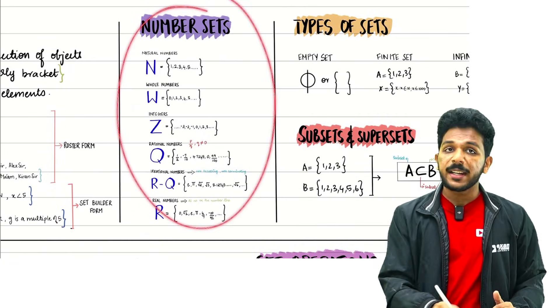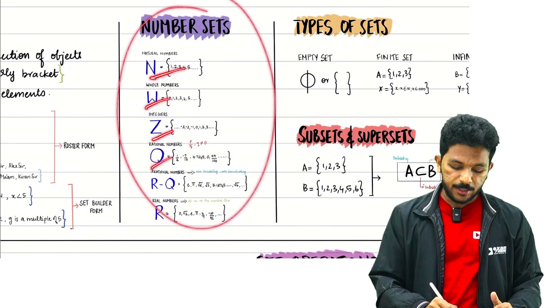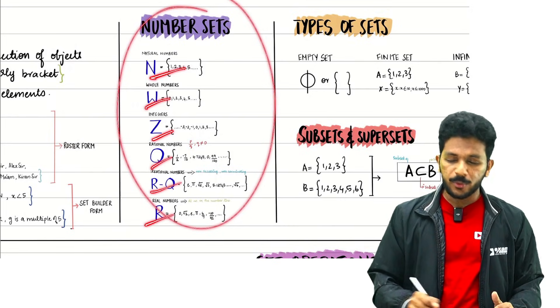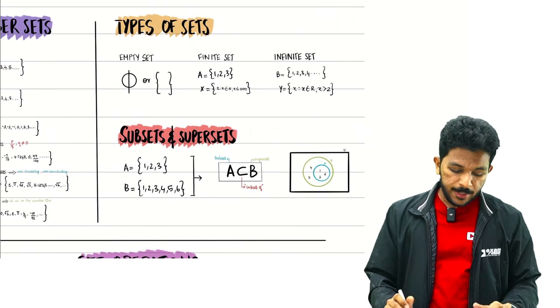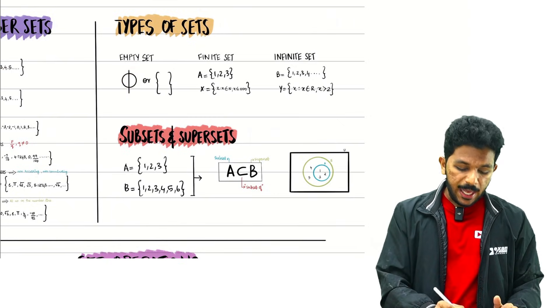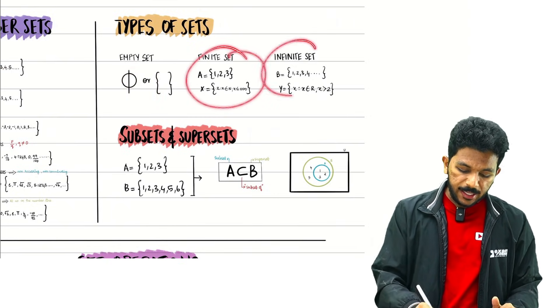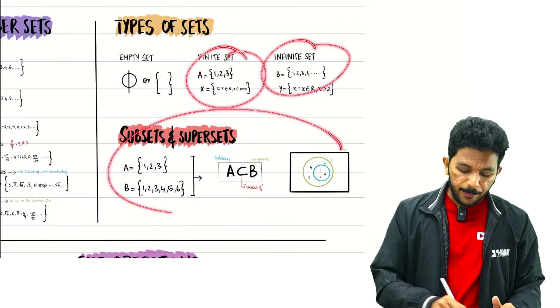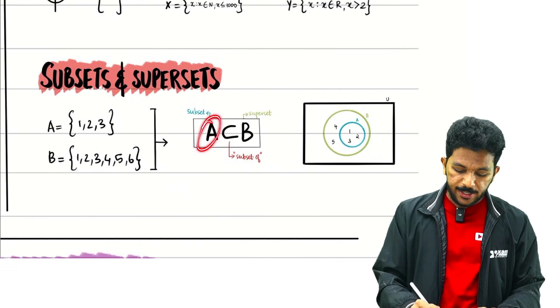Sets include natural numbers, whole numbers, Z (integers), Q (rationals), R-Q (irrationals), and real numbers. Here we have some questions. Types of sets — there are 5 types: empty sets, finite and infinite sets, subsets.